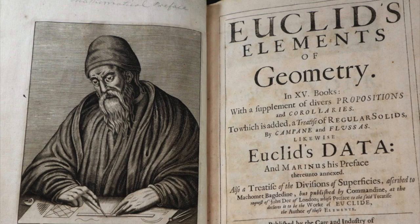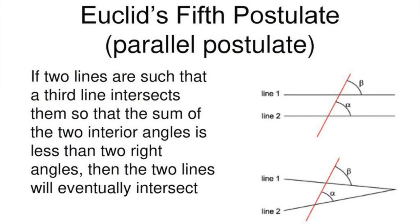They all seem obvious and uncontroversial, except for one, the fifth, which is also known as the parallel postulate. Euclid's statement of the parallel postulate is pretty long-winded and doesn't specifically mention parallel lines, but it's equivalent to the statement two lines that are parallel to the same line are also parallel to each other.